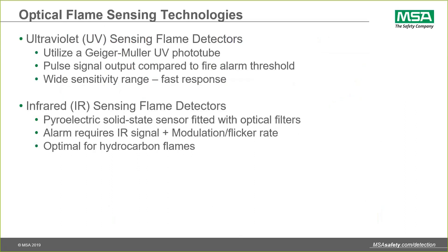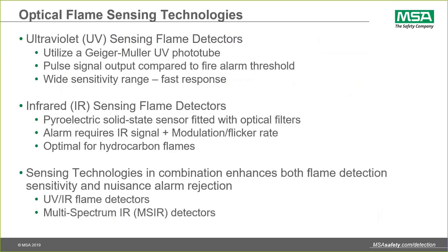Infrared sensors are usually a pyroelectric crystal solid-state sensor fitted with an optical filter to allow it to measure specific frequencies of light. As you can guess, 4.3 microns is one of those key frequencies. Additional signal processing requires not just that energy level in the infrared, but also a modulation or flicker rate, because hydrocarbon fires breathe — they have a flicker — and that's part of the signal processing requirements. They are optimal for hydrocarbon fire detection.